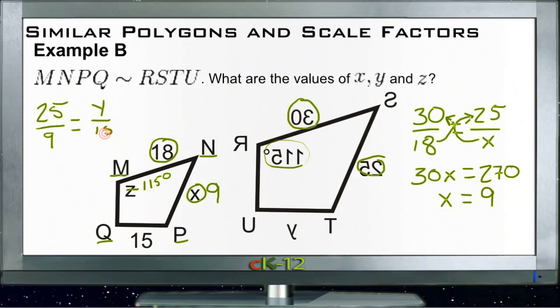So we can say that 25 is to 9 the way that y is to 15. And of course I had to put y on top because it's on the bigger shape and 15 is on the smaller shape. So now we have 9 times y is 9y, and 25 times 15 is 375. So y equals 375 divided by 9. Okay, so now let's take a look at example C.